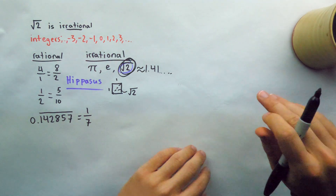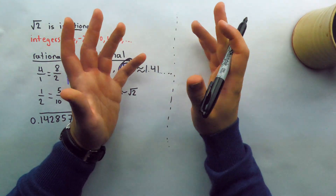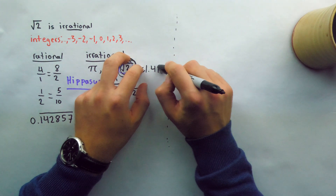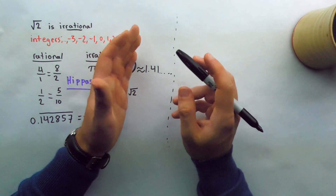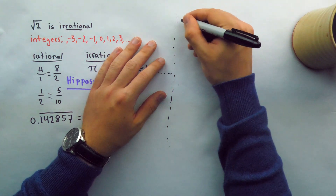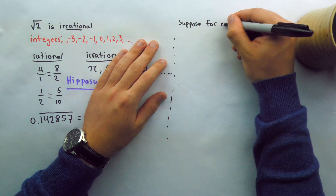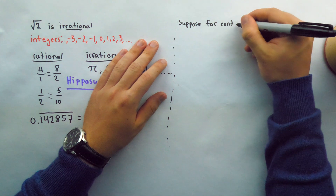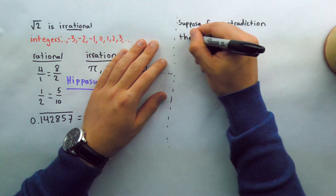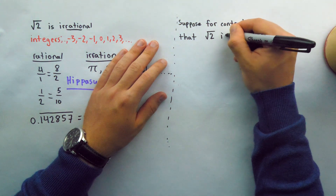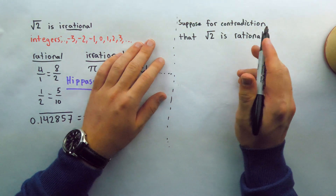The idea behind this proof is that it's going to be a proof by contradiction. We're going to assume the opposite of what we're trying to prove and show that it forces something impossible — a contradiction. Hence, that assumption has to be false. So we start by writing: suppose for contradiction that the square root of 2 is rational. We're going to show that it being rational forces an impossibility.